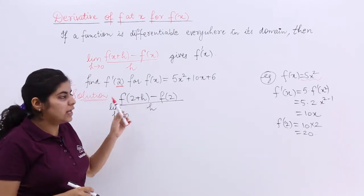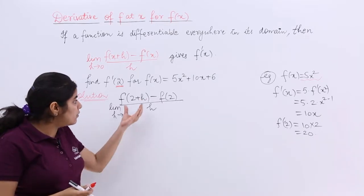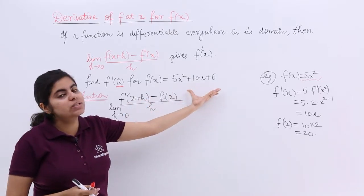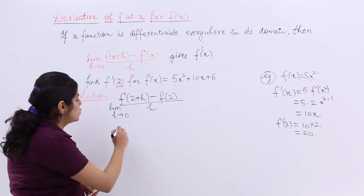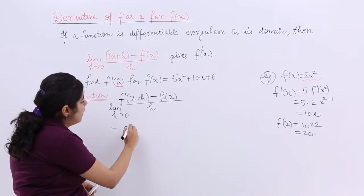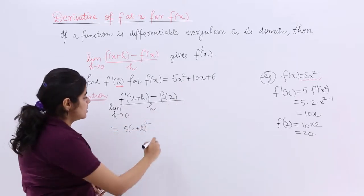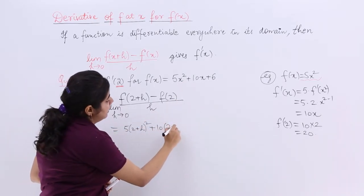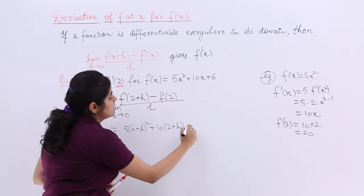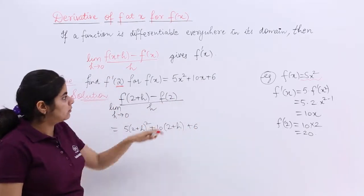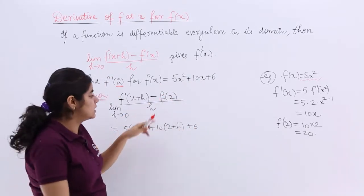Now f of 2 plus h means what? Wherever you have x you have to substitute 2 plus h. So my question changes to 5 multiply by 2 plus h square plus 10 multiply by 2 plus h plus 6. That is given minus is there.